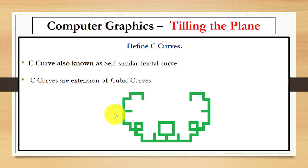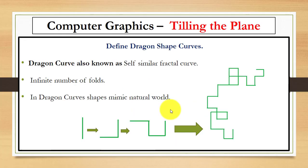Next is C curve. This is also known as self-similar fractal curve. C curves are an extension of cubic curves. This is an example of C curve.